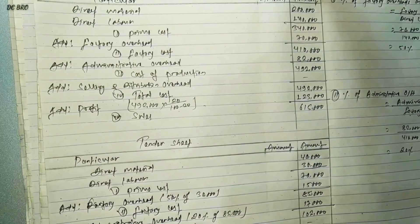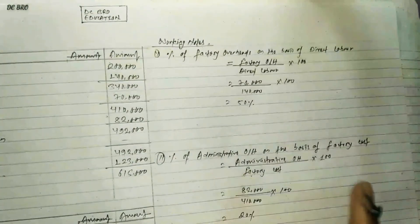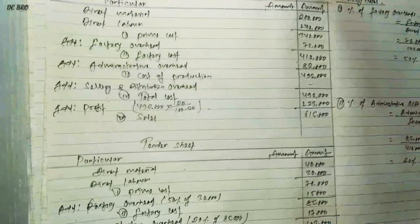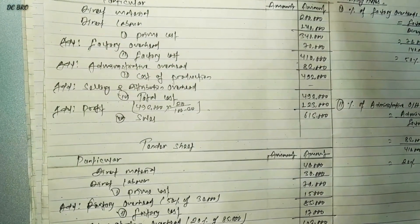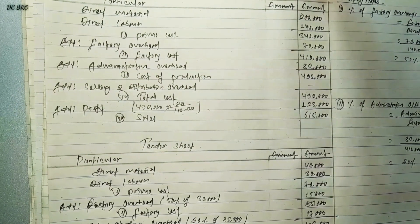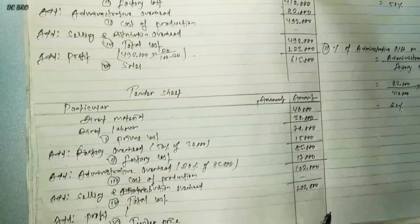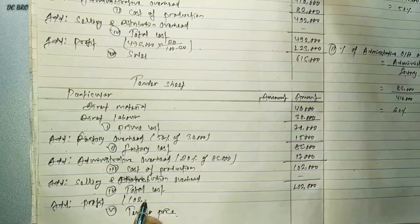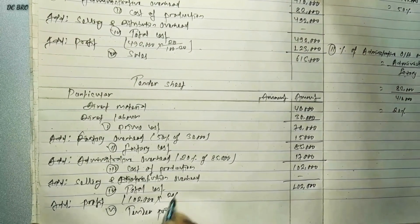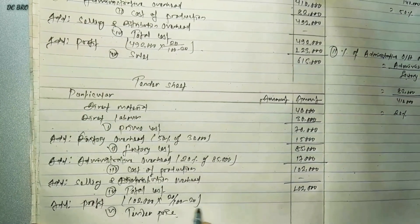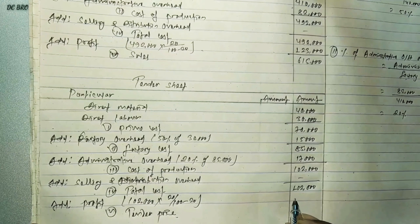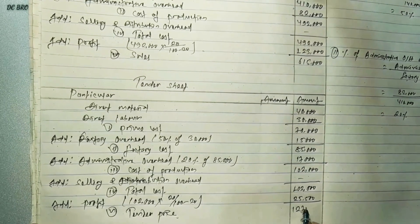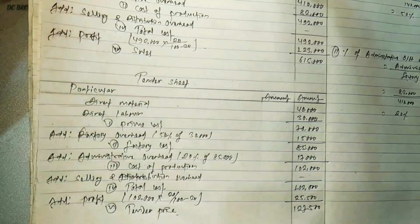This is selling and distribution overhead. Profit is 20%. The result is $1,200,000. This will be $25,000. So $25,000 is the final figure.